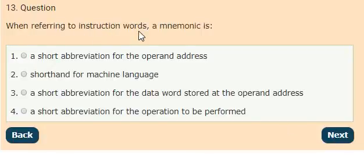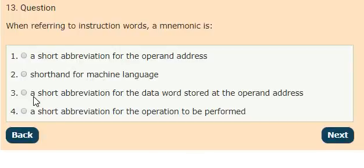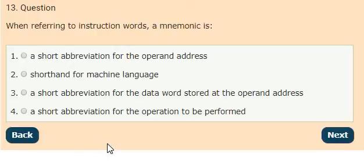Question 13: When referring to instruction words, mnemonic is known as options: a short abbreviation for the operand address, shorthand for machine language, a short abbreviation for the data word stored at the operand address, a short abbreviation for the operation to be performed. The correct answer is option 4, a short abbreviation for the operation to be performed.